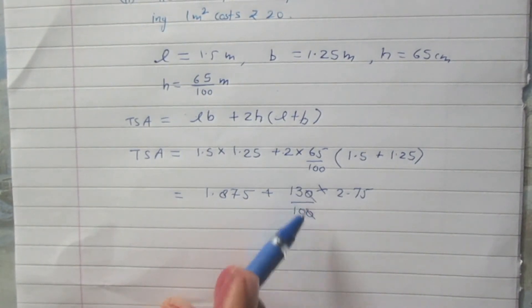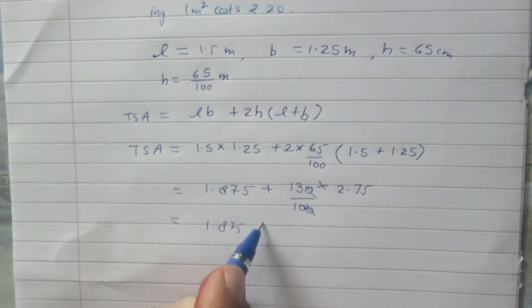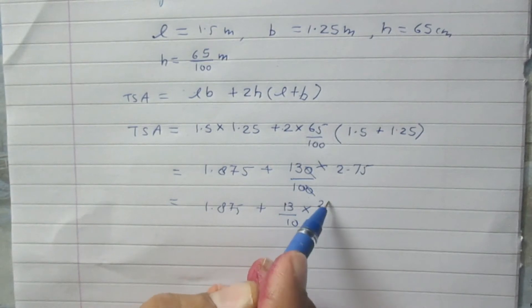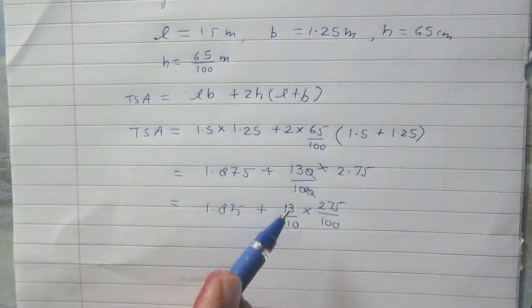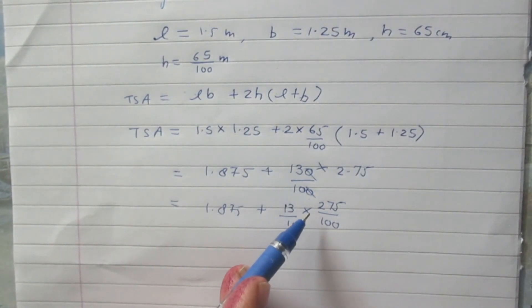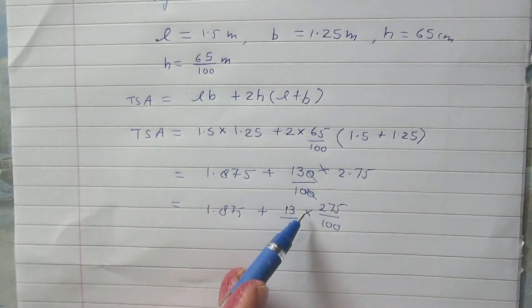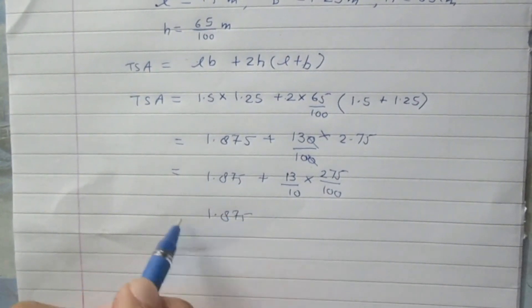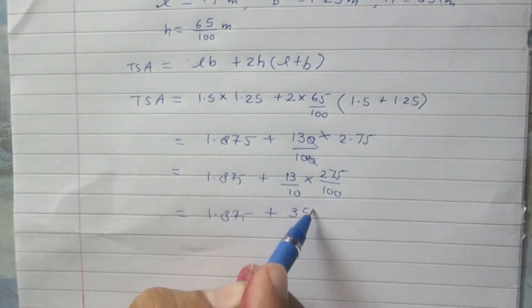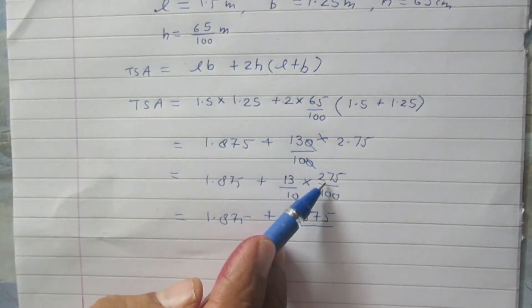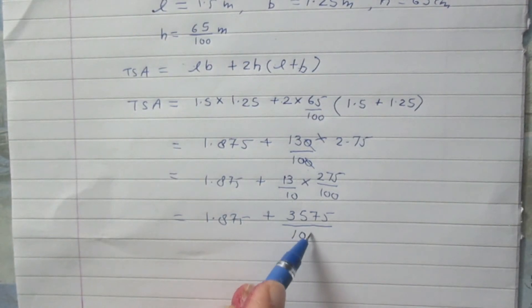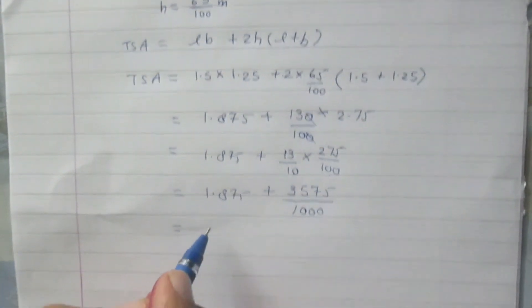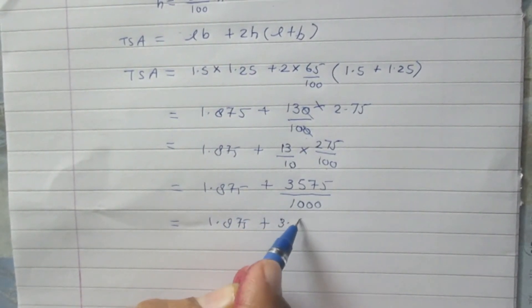1.5 plus 1.25 is 2.75. These two zeros can be cancelled, giving us 1.875 + (13/10) × 2.75, which can be written as 275/100. Multiplying 13 and 275 in the numerators gives 3575. So it is 1.875 + 3575/1000, with 1000 in the denominator because 100 × 10. We can convert this to decimal form to get 1.875 + 3.575.